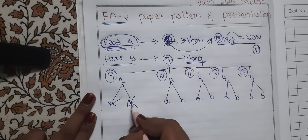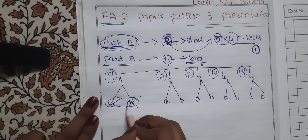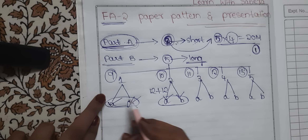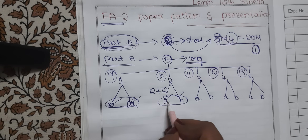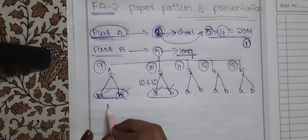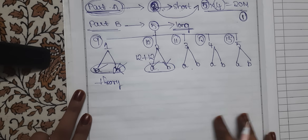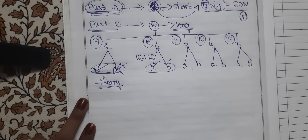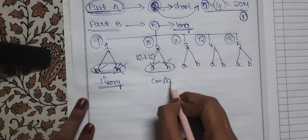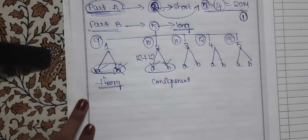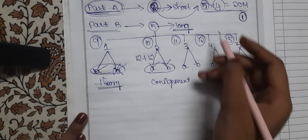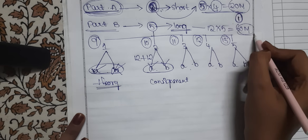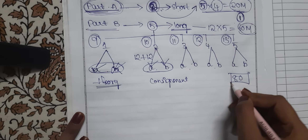From each question you must attempt either A or B — not both. Topics covered include consignment accounts, joint venture accounts, single entry system, and income and expenditure accounts. Each long question carries 12 marks, so 12 into 5 is 60 marks. Adding Part A's 20 marks, the total paper is for 80 marks.